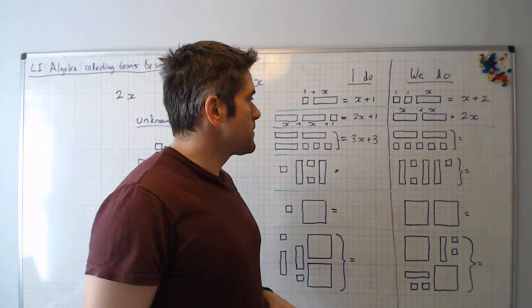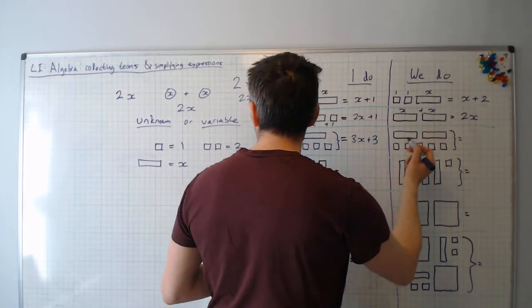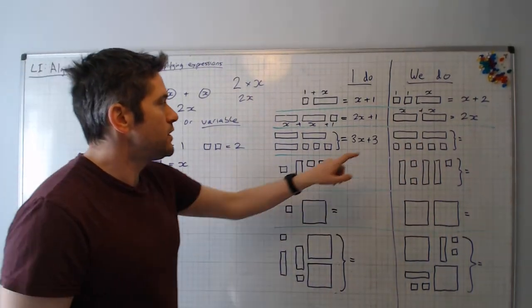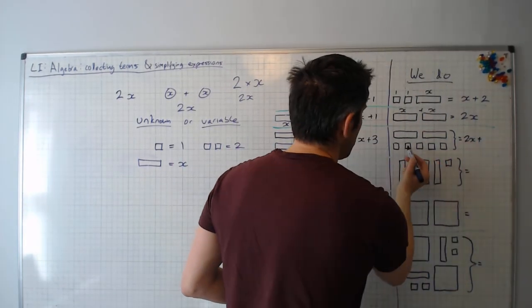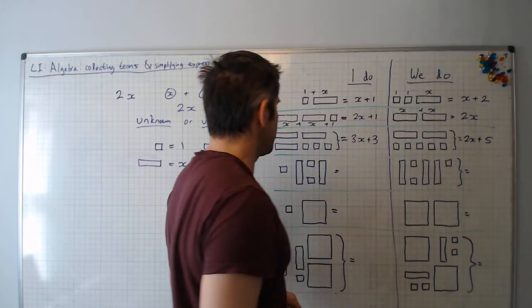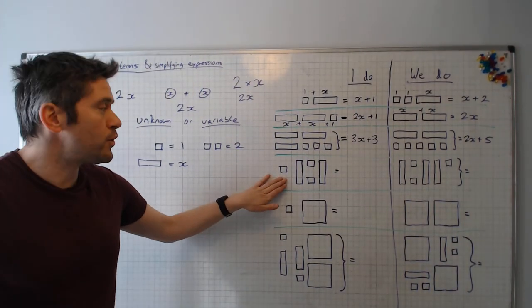Pause the video. Have a go at your go. 1, 2. They're both of type x, not 1. So we've got 2x plus 1, 2, 3, 4, 5. Doesn't matter what order they are in.